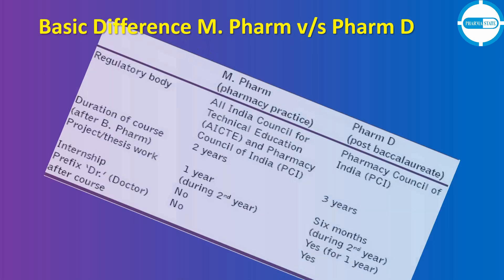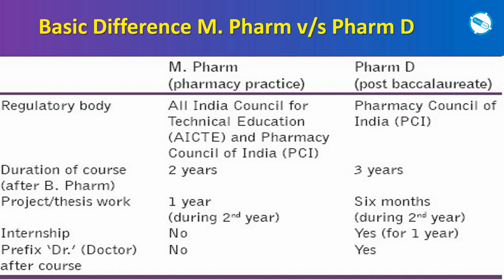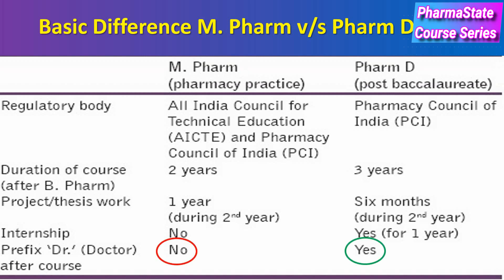Comparing M.Pharm versus Pharm D: for M.Pharm, the regulatory body is AICTE and PCI; for Pharm D, it is PCI only. The duration after B.Pharm is two years for M.Pharm and three years for Pharm D. M.Pharm has a one-year project during the second year, while Pharm D has a six-month project in the second year. Internship is present in Pharm D but not in M.Pharm, and the Doctor prefix can be used by Pharm D graduates.